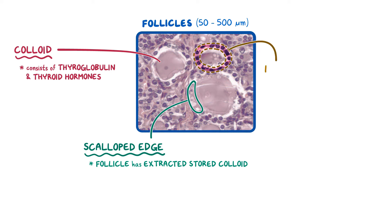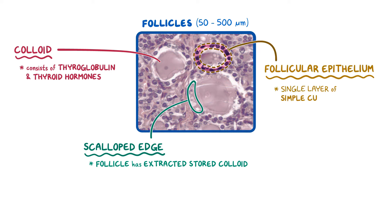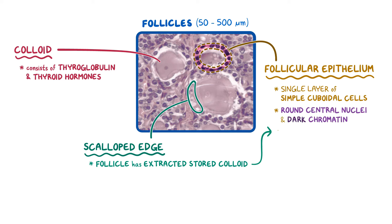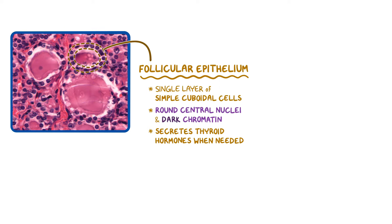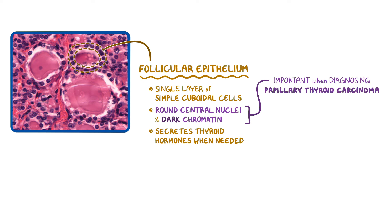The follicular epithelium is made of a single layer of simple cuboidal cells with round central nuclei and dark chromatin. These cells are responsible for secreting thyroid hormones when needed. The nuclear features of these cells are particularly important, because they're the main feature looked at when diagnosing papillary thyroid carcinoma.